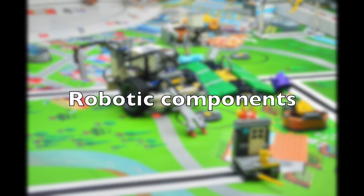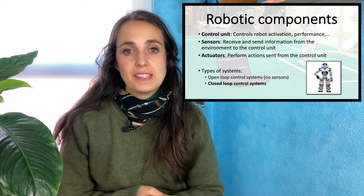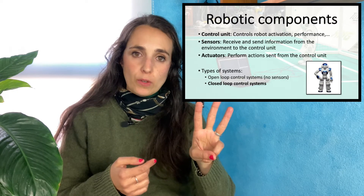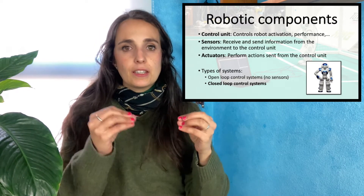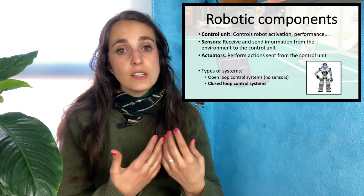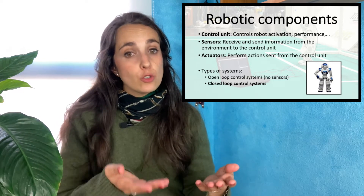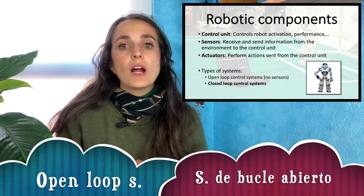In a previous video we talked about the concept of robotics and robots, and we said that inside the architecture of robots we have different structures that act as sensors or actuators — and today we will learn about them. A robot has three main components: the control unit, which is like the processor or the mind of the robot, with a motherboard that receives all the information, analyzes it, and gives an answer to that stimulus. The objects that receive the information are called sensors, and the objects that perform the action analyzed by the control unit are called actuators.